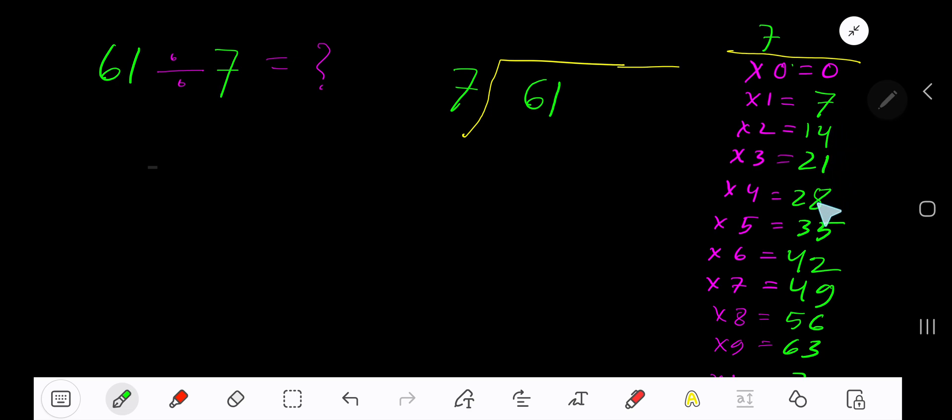This process will continue. 7 goes into 6 how many times? Zero times, as 6 is less than 7. 0 times 7 is 0. Subtract. 6 remains. Bring down the next digit, which is 1.